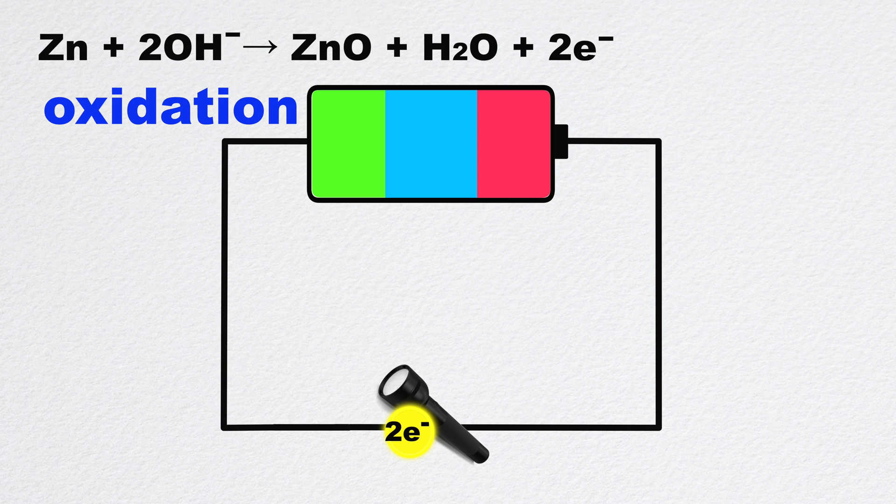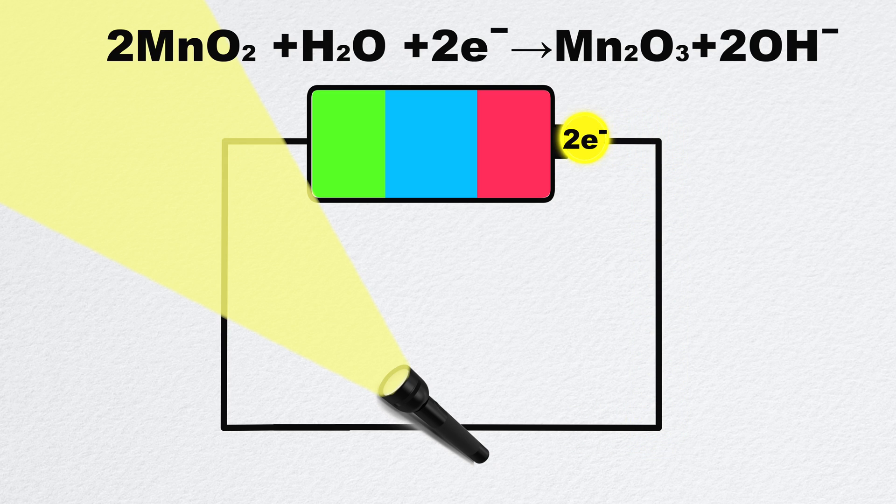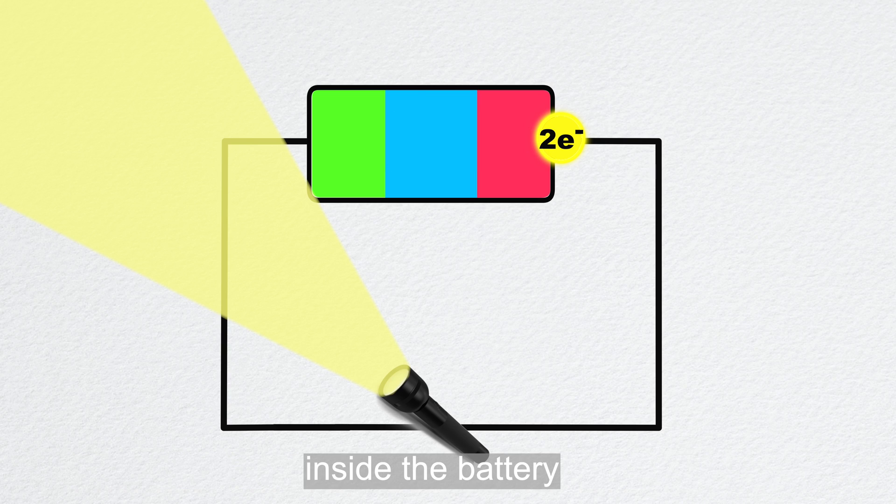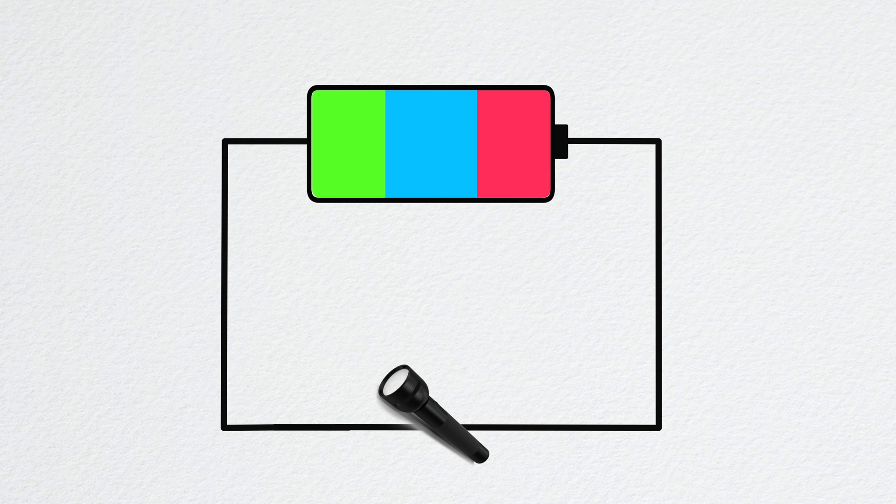The electrons pass through the flashlight, turning the lights on. Then they re-enter the battery at the cathode. These electrons combine with manganese dioxides to form manganese oxide. It is a reduction reaction. To carry back electrons from the cathode to the anode inside the battery, charged ions flow through an electrolyte solution between the electrodes. This completes the circuit and powers your flashlight.